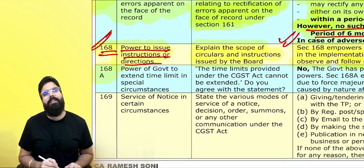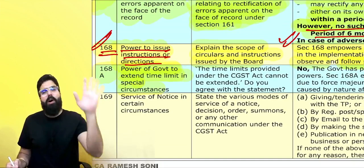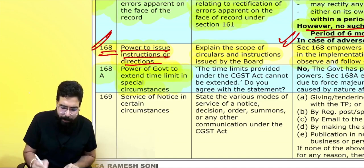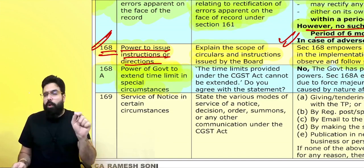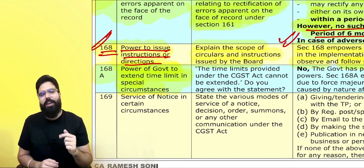Section 168A gives the power of the government to extend time limits in special circumstances. If the government wants to extend the time limit for filing returns or other compliance, section 168A grants that power. For example, when COVID came, this section was used to extend time limits for all returns and compliance.